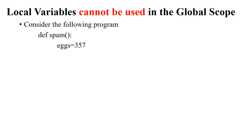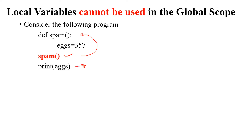Inside the function, x is the variable assigned with a value of 357. It is defined inside the function, hence x is called a local variable. Next, I call the function spam, then print x. What could be the output? The program execution begins at the line where spam is called, then goes to the definition of the spam function where x is assigned 357.